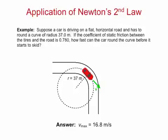Furthermore, we can see why you have to take tight curves more slowly than gentle curves. A tight curve means a small radius r, which in turn means a small maximum safe speed.